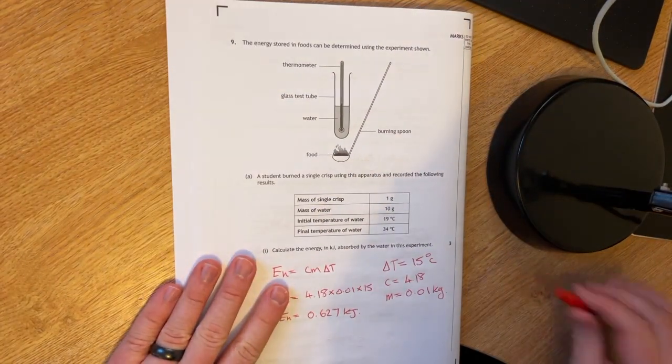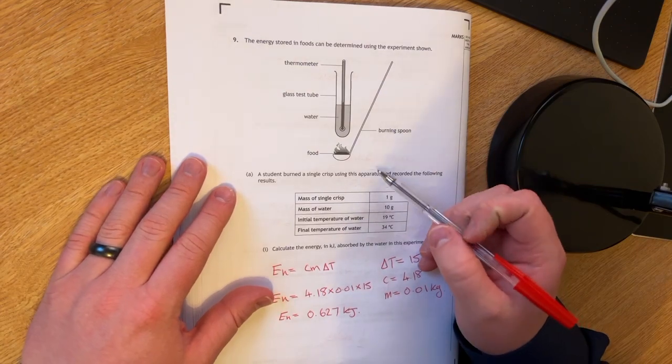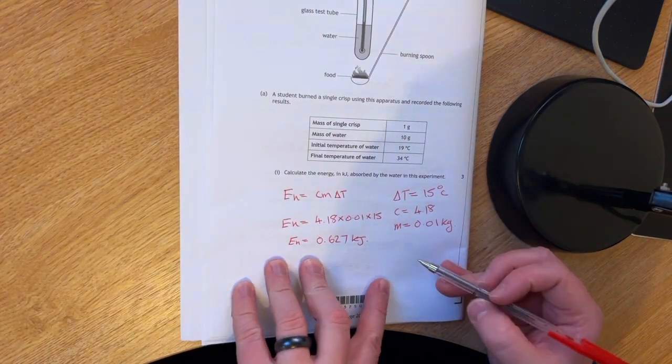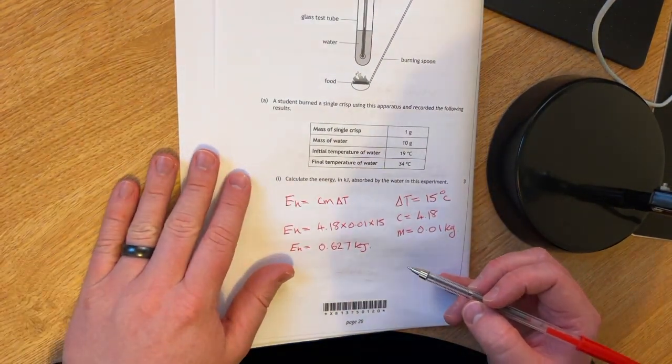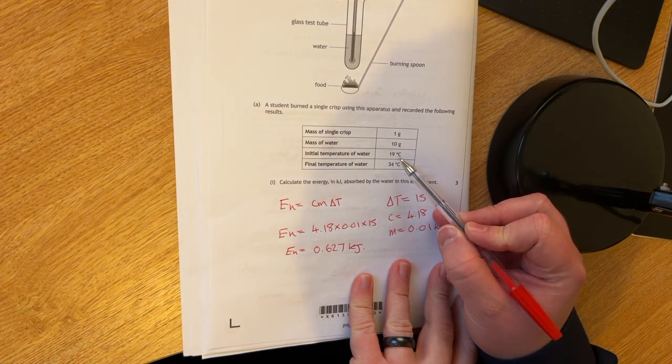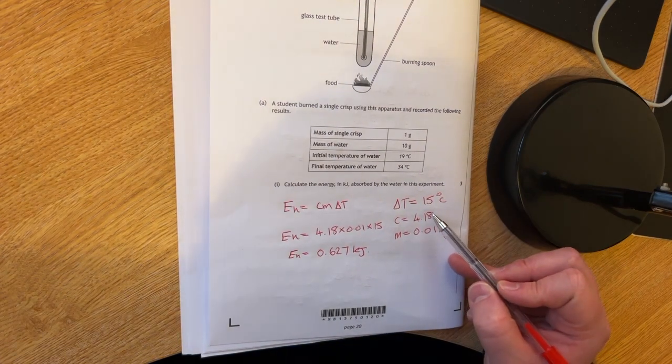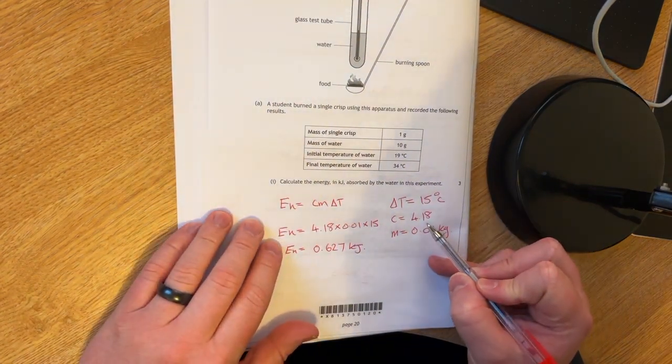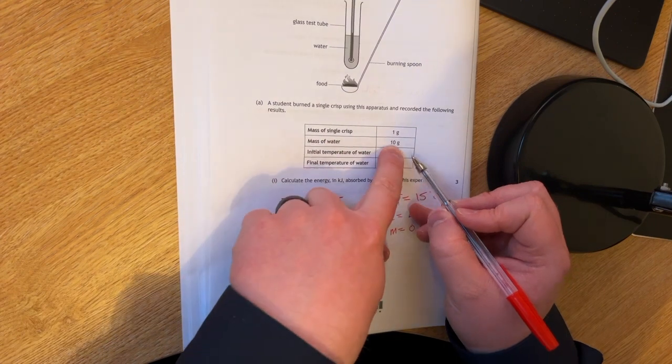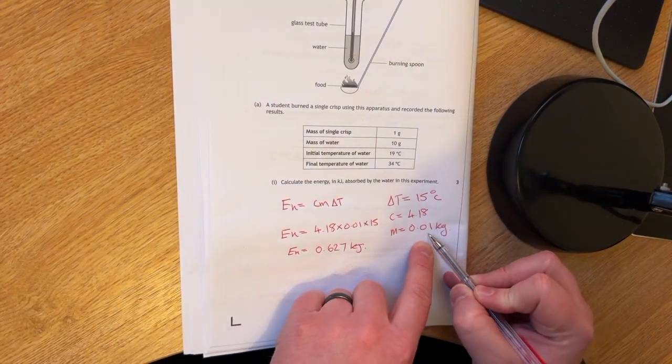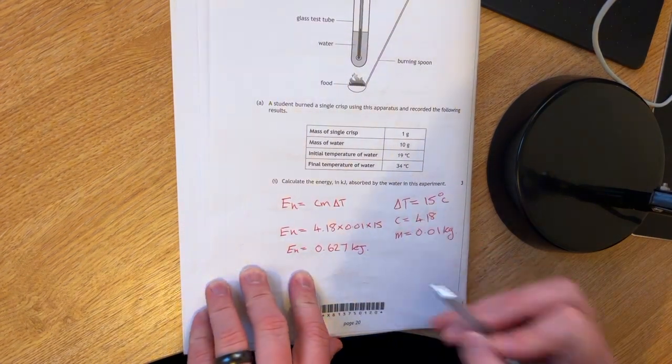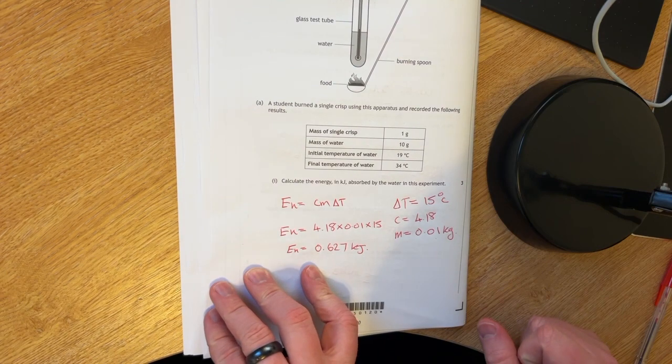Question nine. The energy stored in foods can be determined using the experiment shown. This is just an E = cmΔT calculation. I thought this was nice. It was set out really nice and the kids were going to be able to access this. So you just need to calculate your difference in temperature, which is 15 degrees. You need to know to get the specific heat capacity from the data booklet, which is 4.18 and it's your mass of water in kilograms, which is 0.01 kilograms. Shovel that into a calculator and you should get 0.627 kilojoules.